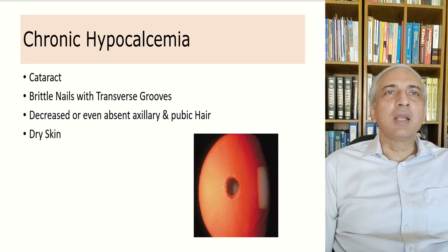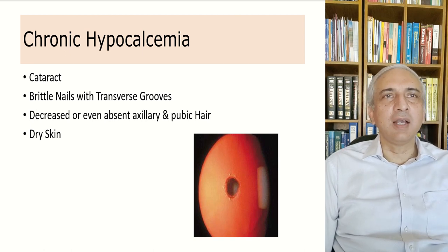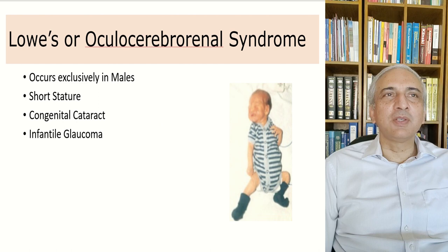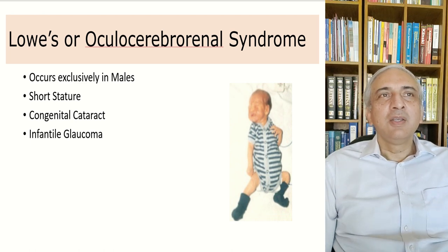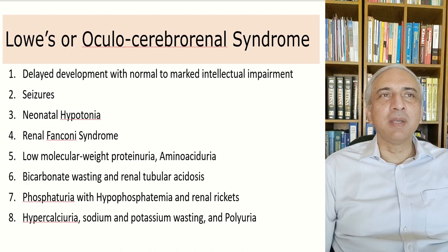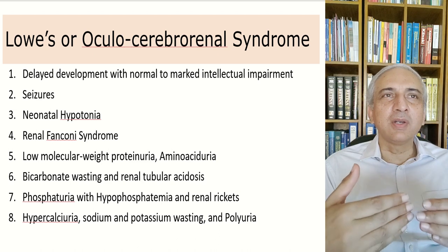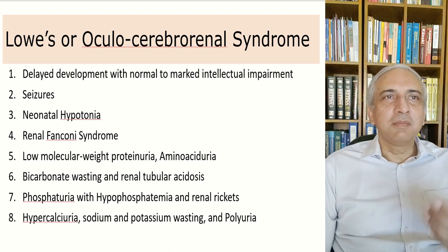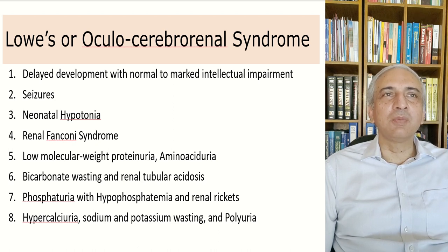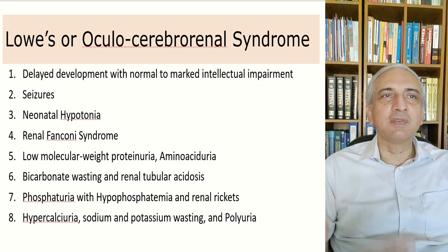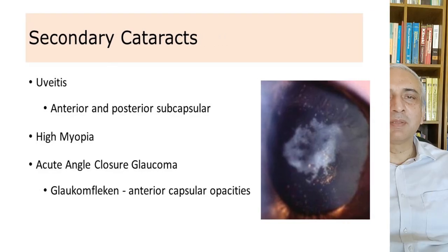Hypocalcemia produces small discrete white flecks or crystals in the lens. Chronic hypocalcemia is also associated with brittle nails with transverse grooves, decreased or absent axillary and pubic hair, and dry skin. Lowe syndrome occurs exclusively in males and features short stature, congenital cataract, infantile glaucoma, delayed development with intellectual impairment, seizures, neonatal hypotonia associated with neuronal maldevelopment, and renal Fanconi syndrome — presenting with low-molecular-weight proteinuria, aminoaciduria, bicarbonate wasting, renal tubular acidosis, phosphaturia, hypercalciuria, and polyuria.